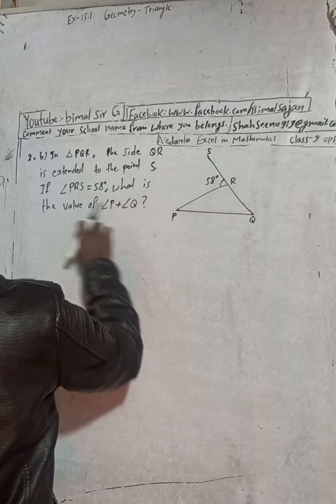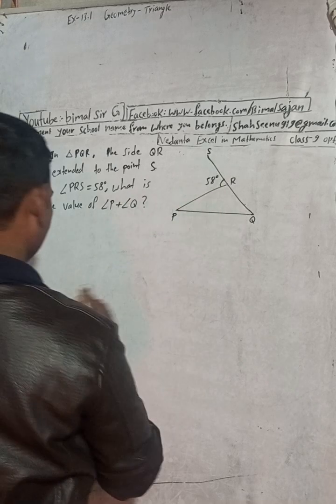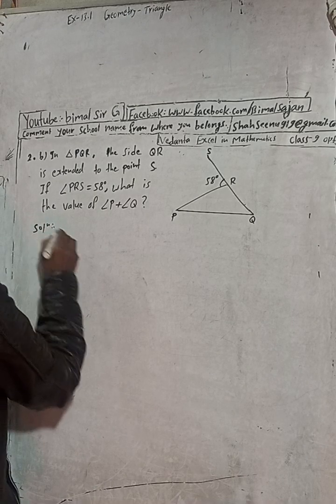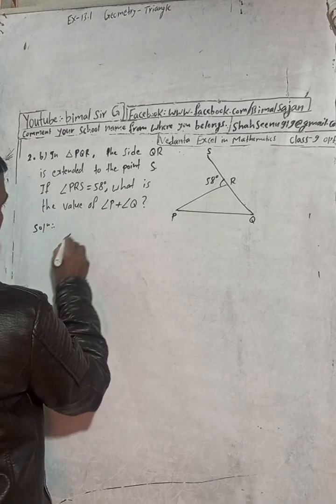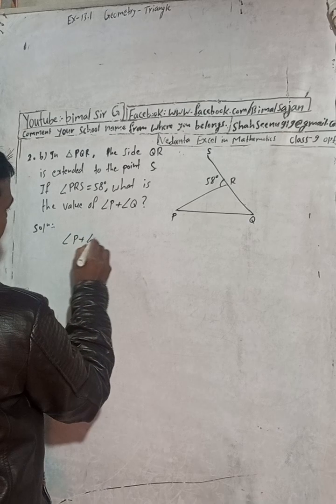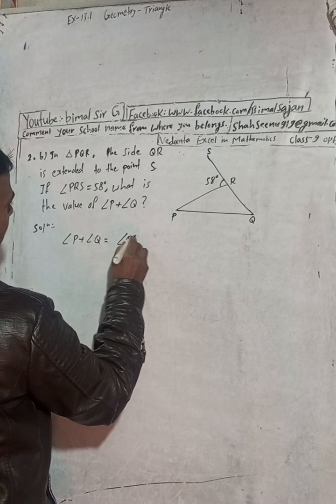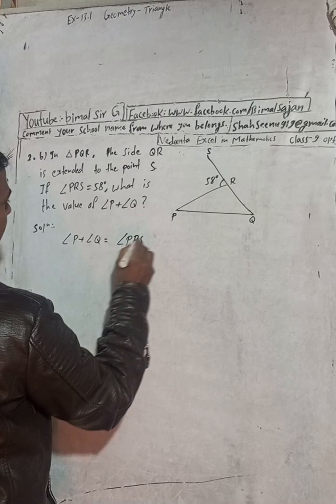What is the value of angle P plus Q? So here's the solution. Just write here that angle P plus angle Q is equal to angle P, and that is equal to 58 degrees.